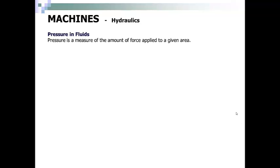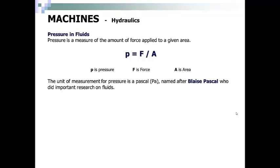Pressure is a measure of the amount of force applied to a given area. Pressure is equal to force divided by area. P equals pressure, F equals force, and A equals area. The unit of measurement for pressure is called a Pascal, or PA, named after Blaise Pascal, who did important research on fluids. One Pascal is equal to the force of one newton over an area of one meter squared.